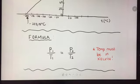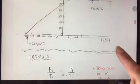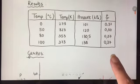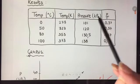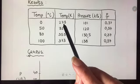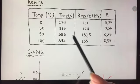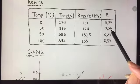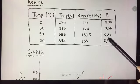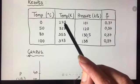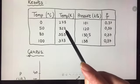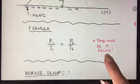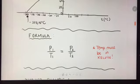The formula we use for Gay-Lussac's law is: pressure 1 divided by temperature 1 is equal to pressure 2 divided by temperature 2. And very importantly, the temperature must be in Kelvin. How did we get that? Similar to Charles' law — if this is my first set of results, pressure 1 divided by temperature 1 gives 0.37. Pressure 2 divided by temperature 2 is also 0.37. If these are equal, then P1/T1 = P2/T2, and that is the formula.